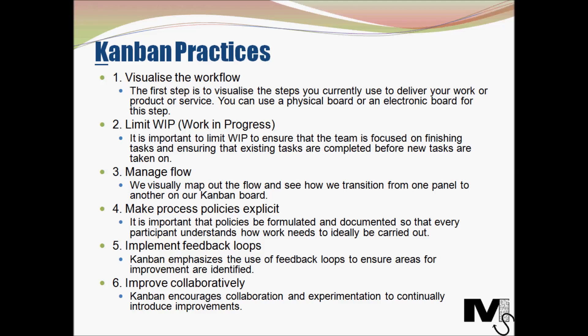The fourth practice is: make process policies explicit. Process policies refer to the rules and guidelines each person is expected to follow to deliver consistent results. It is important that these policies be formulated and documented so that every participant understands how work needs to be carried out. The fifth practice is: implement feedback loops. Kanban emphasizes feedback loops to ensure areas of improvement are identified, with feedback coming from team members, stakeholders, or customers. The sixth practice is: improve collaboratively — Kanban encourages collaboration and experimentation to continually introduce improvements and deliver better results for customers.